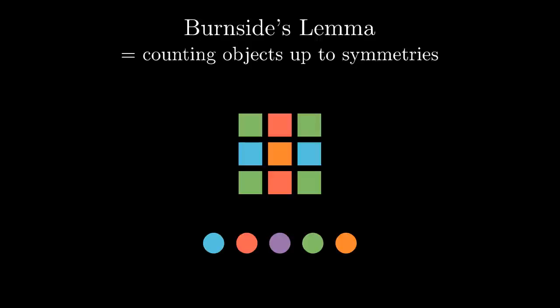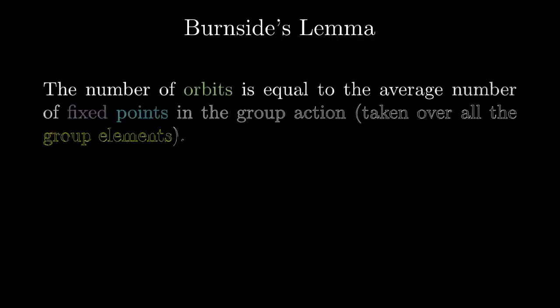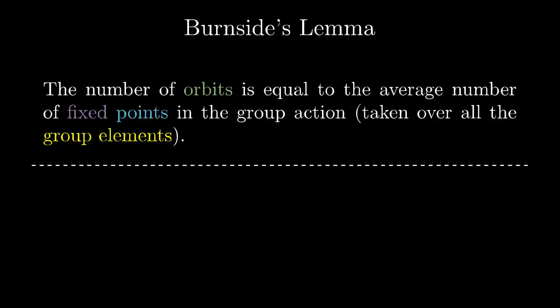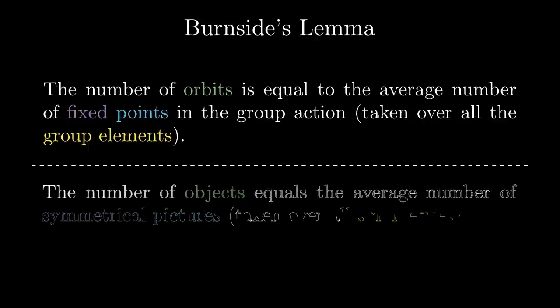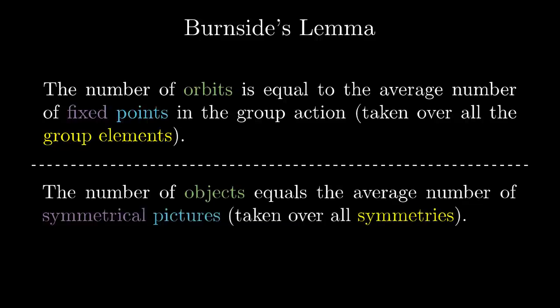In specialized materials we can find Burnside's lemma approximately in the following form. The number of orbits is equal to the average number of fixed points in the group action taken over all the group elements. But I don't think it's a good idea to start by diving into group theory so I've translated the lemma for you into a hopefully more comprehensible language. The number of objects equals the average number of symmetrical pictures where we take the average over all the symmetries. Yes, the two sentences have the same meaning, just using different terminology.